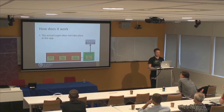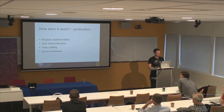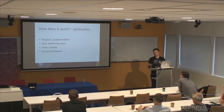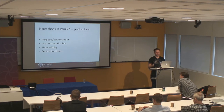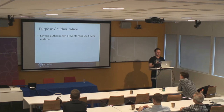The actual crypto does not take place in the app, which is cool. Key material will never enter the app process. And you can ask whether your key is in the secure world or not. When you generate your keys, you already get control. You can define the authorization or purpose of what the key is authorized for. You can say whether the user should authenticate, put some temporal validity on there, and tell it that it has to be in the secure hardware. Key authorization should prevent misuse of the key material, meaning that once extracted — if that would happen — you shouldn't be able to use it for something other than what the developer intended.